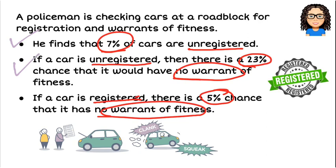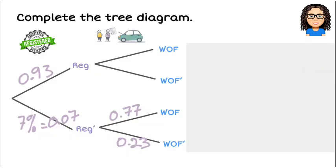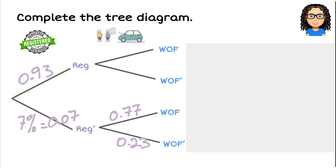If a car is registered, there's a 5% chance of no warrant — so that's 0.05. The opposite of that is a 95% chance that it does have a warrant. So there's the first part of the tree set up.